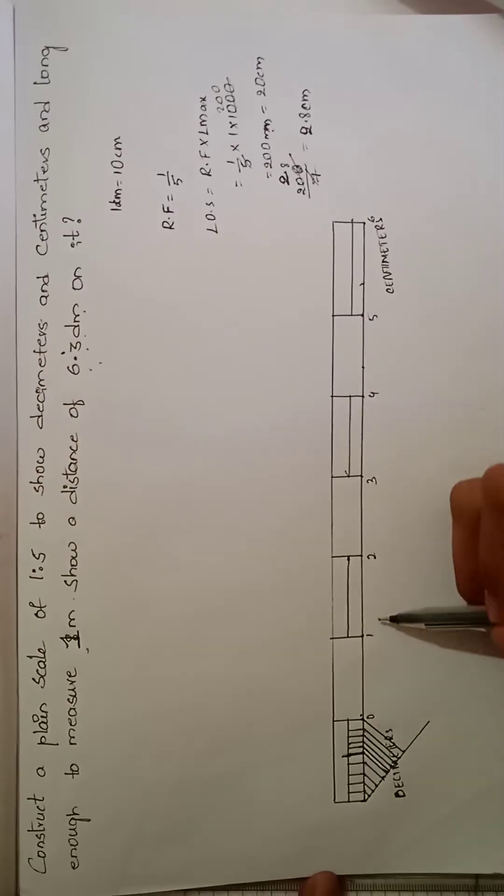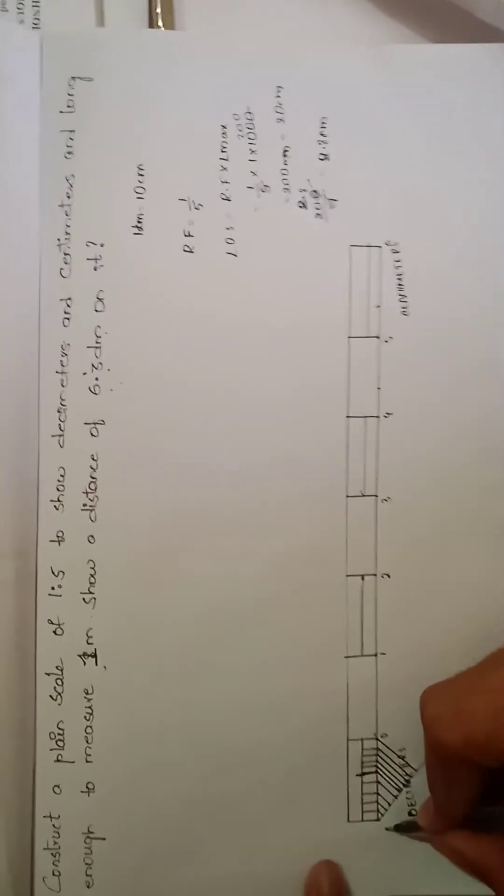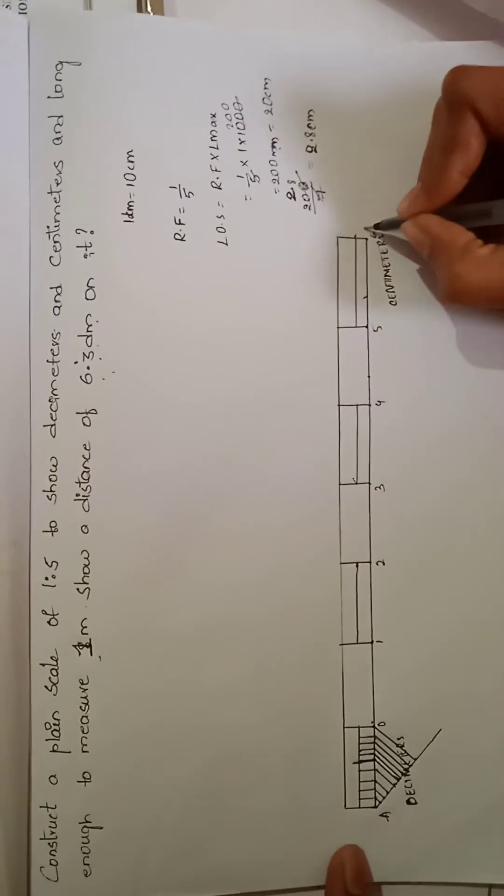Then we have to mark this 0, 1, 2, 3 and so on up to 6. Then we have to mark that with A, B, C, D.